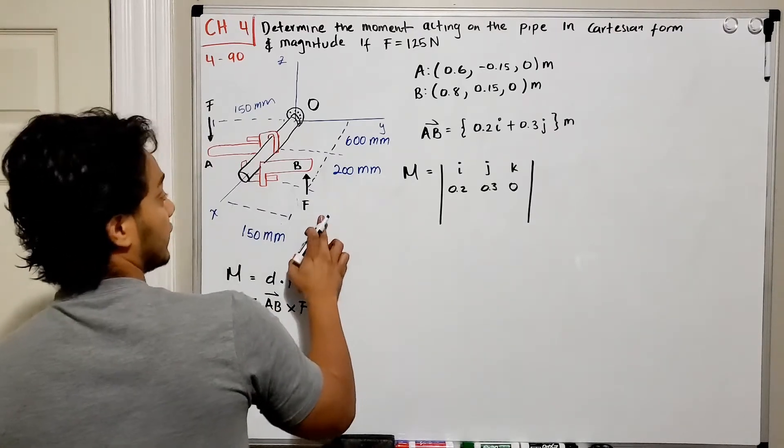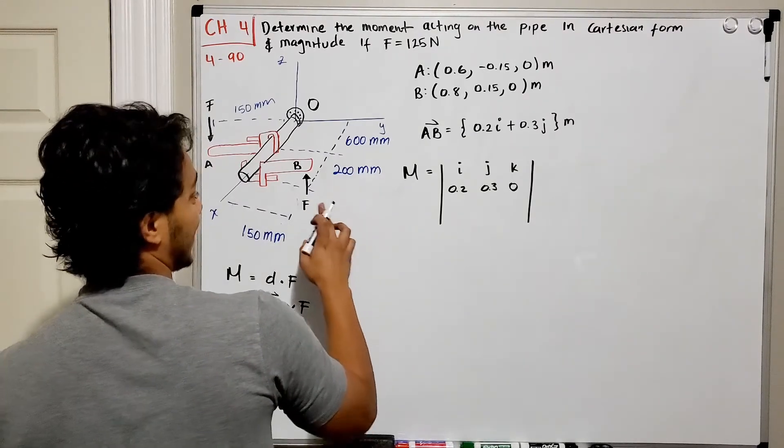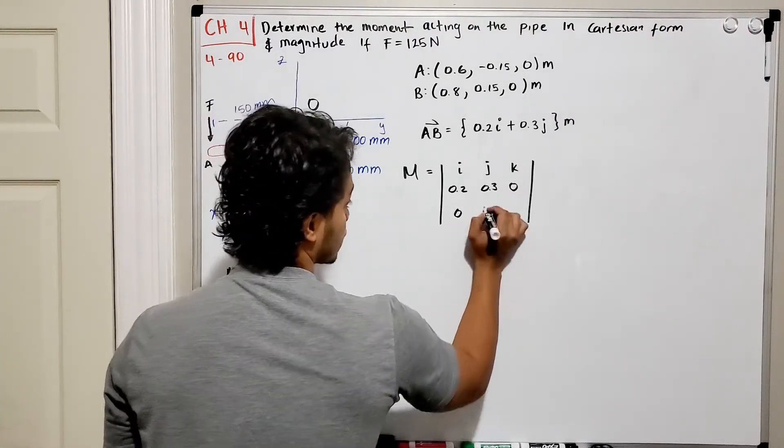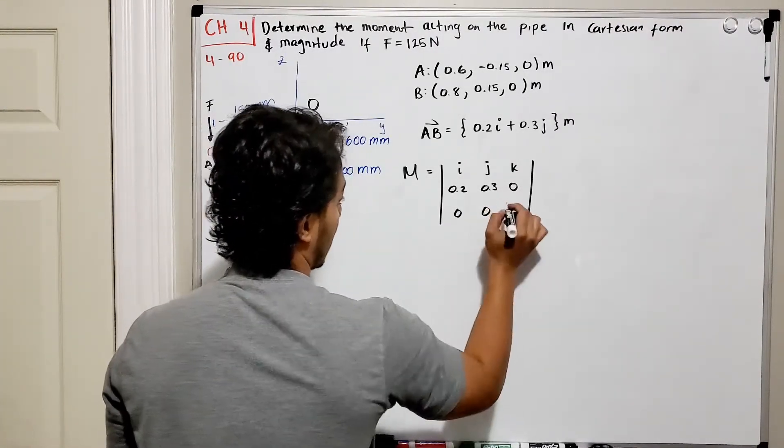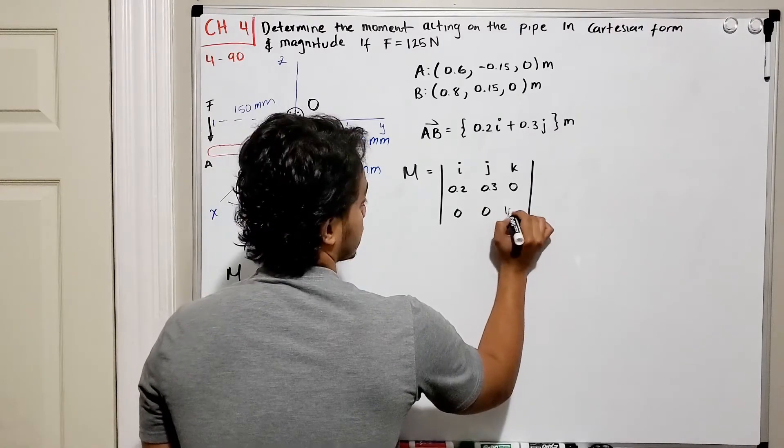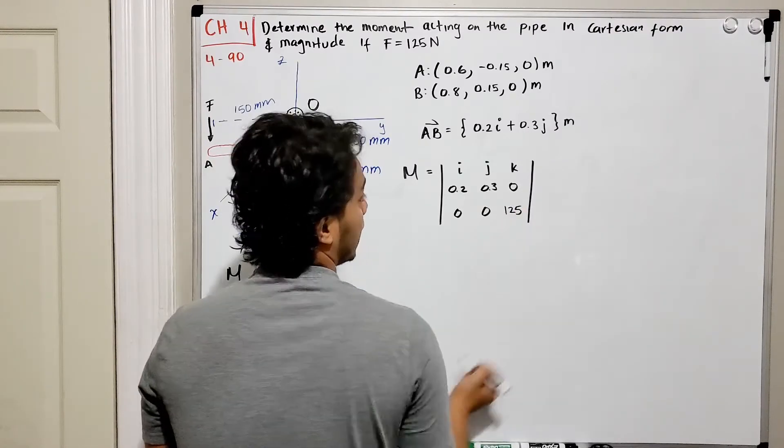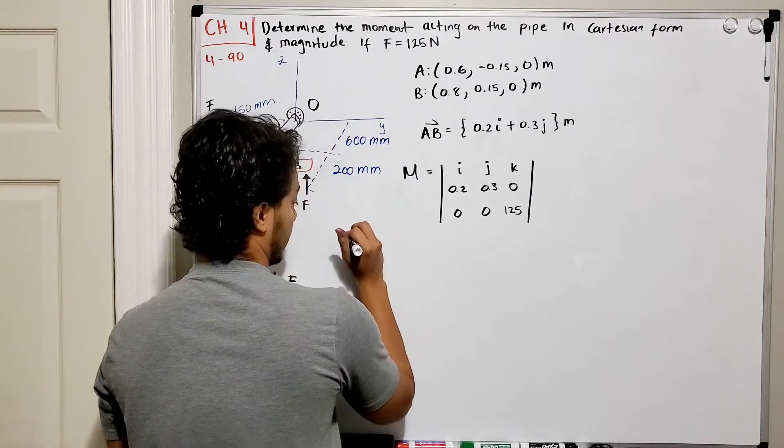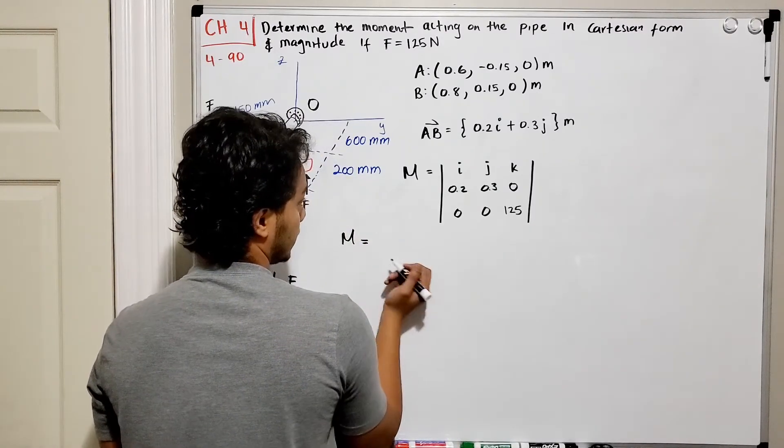For my force F what do I have? I have that is totally going down or up, so we'll keep it positive just a magnitude but in the z-direction. So I have 0 in the x-direction, 0 in the j-direction, but I have 125 in the k-direction.